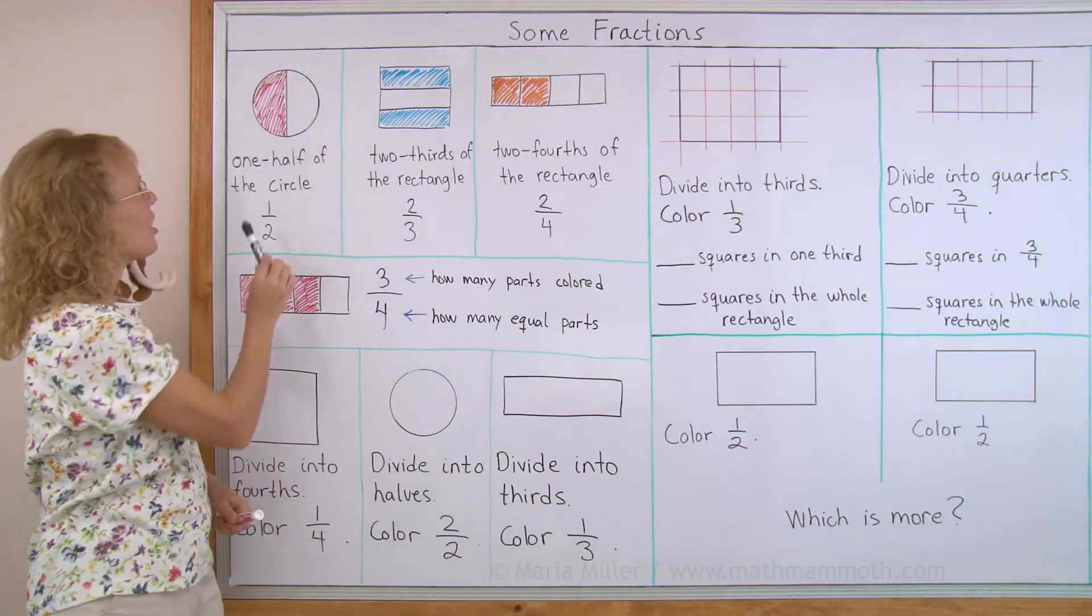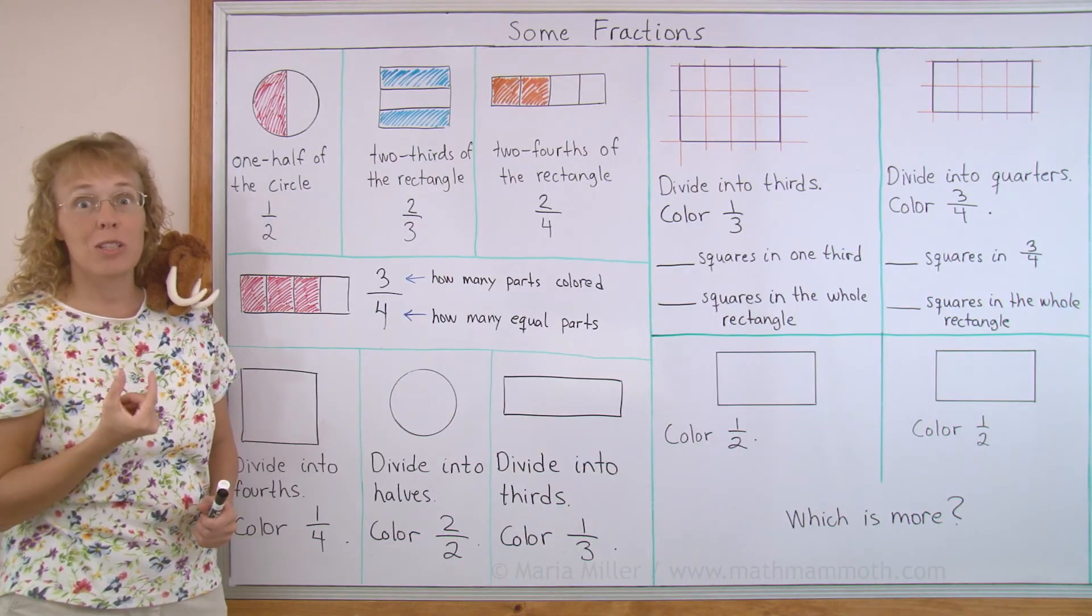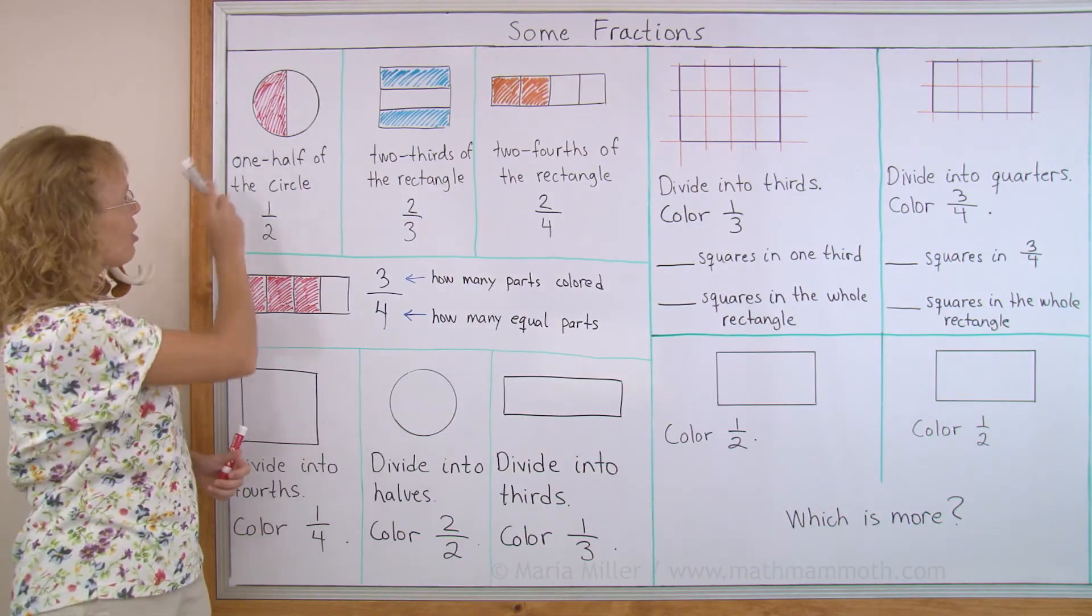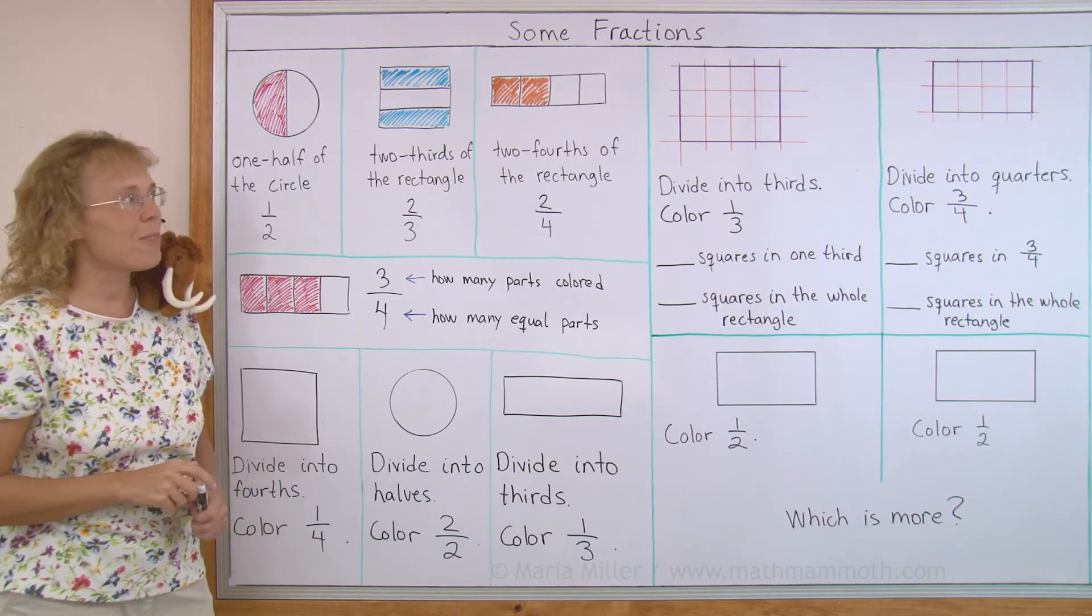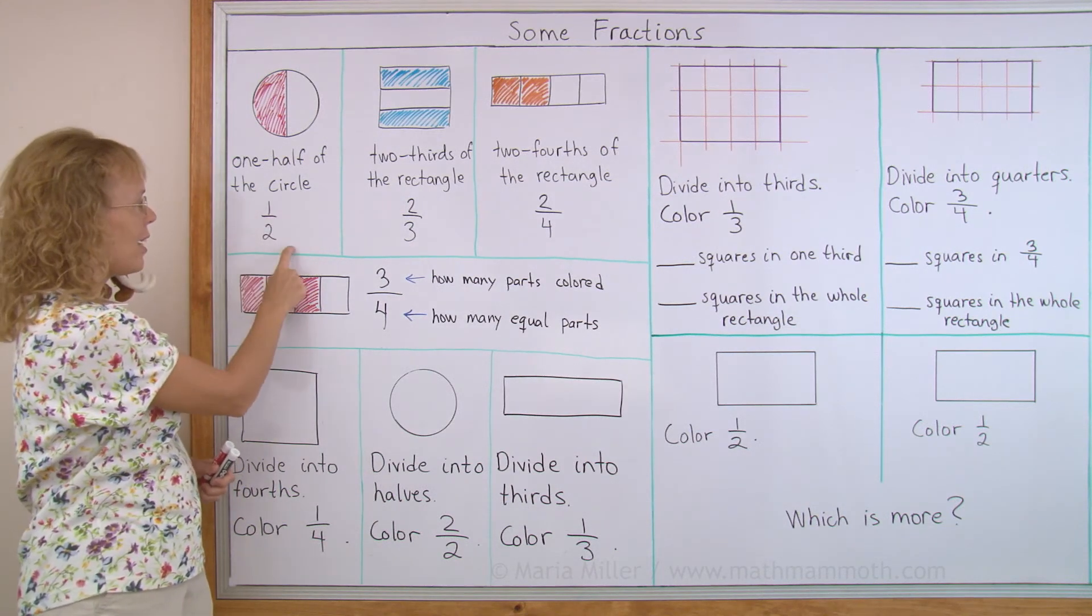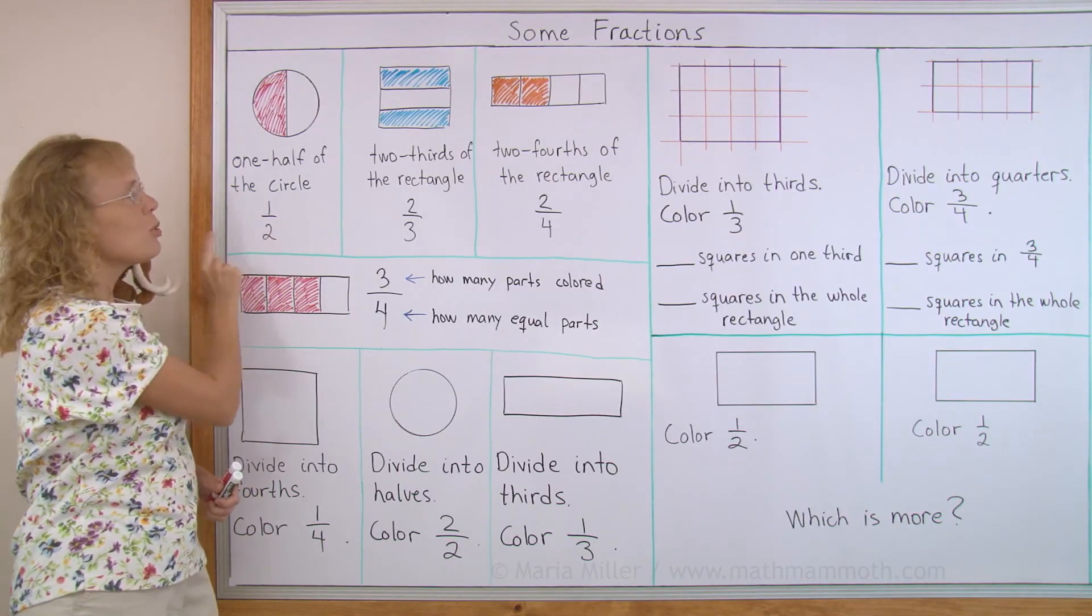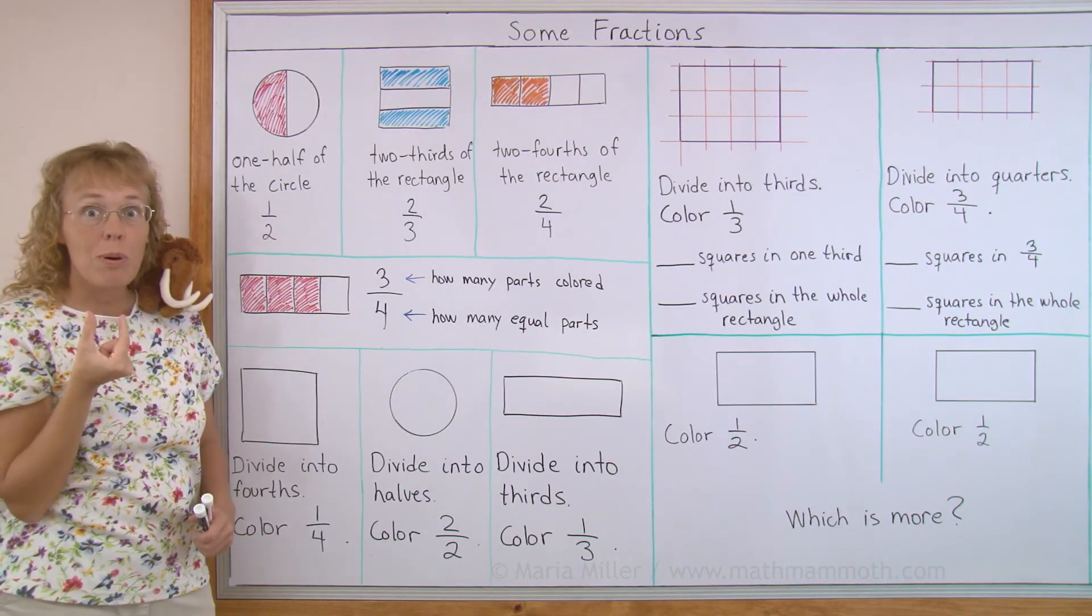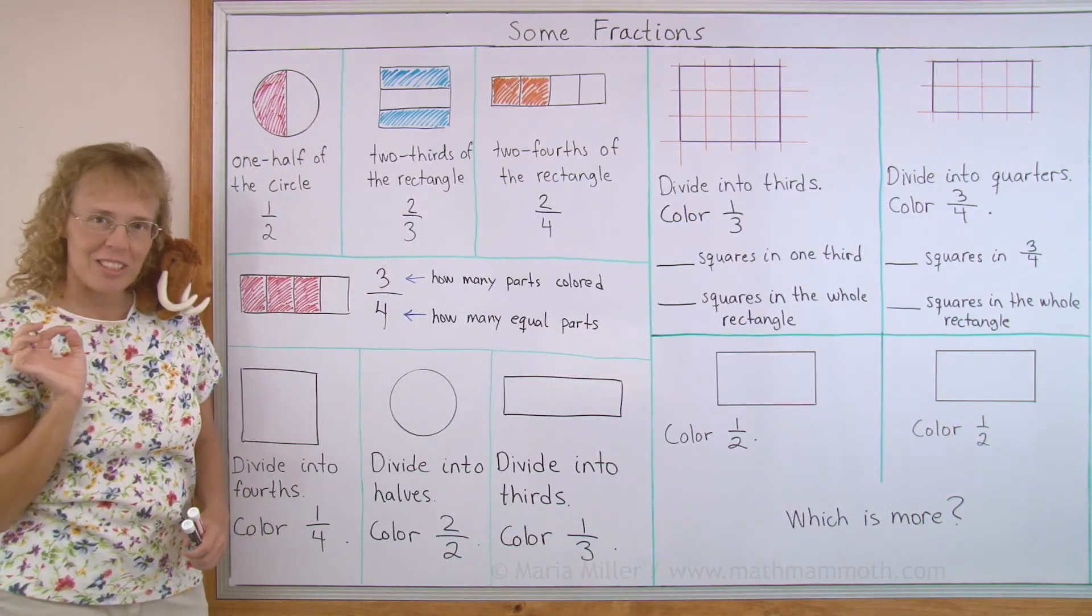For example, here I have a circle, so I divide it into two halves, two equal parts, and then I colored one of those parts and so that is one half of the circle. And this is how we write one half. There's one and there's two. The two signifies that there are two parts, and the one signifies that one of them is colored.